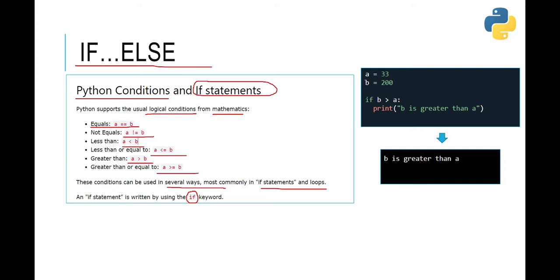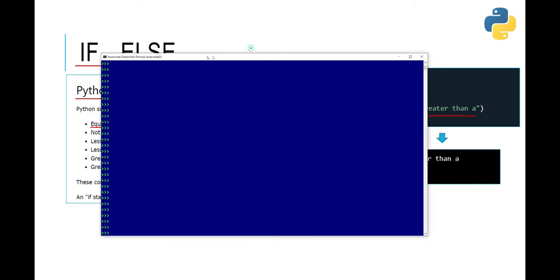On the right side we see one example where we have a variable 'a' equal to 32 and 'b' equal to 200. We are saying: if b is greater than a — this is the condition we are checking. If b is greater than a, then we print 'b is greater than a'. The answer will be that output. So let's try this in Python.